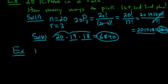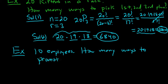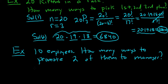One more simple example. The video is getting kind of long. Say we have 10 employees. How many ways to promote two of them to the same position? Two of them to manager. So you have 10 employees. You want to know how many ways to promote two of them to manager. So because it's the same position, the order does not matter. So this is a combinations problem.